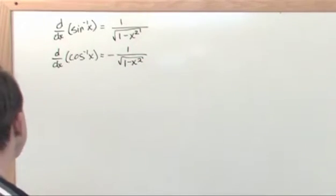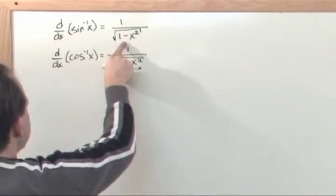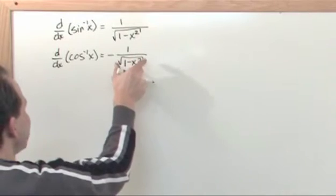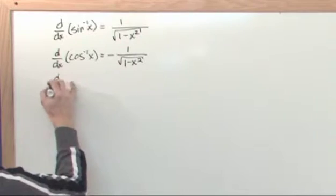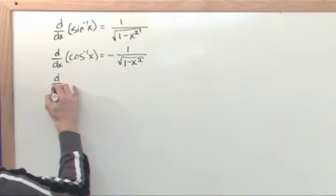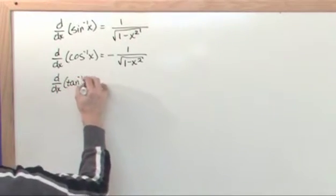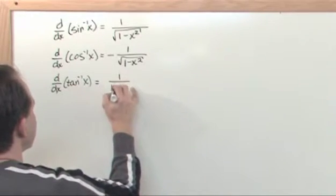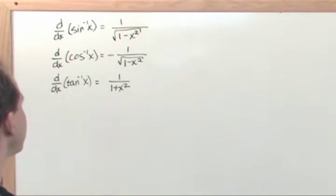Notice that symmetry — the derivative of the inverse sine, or arcsine, equals one over the square root of one minus x squared, and the derivative of the inverse cosine is the exact same thing with a negative sign out front. The derivative of the inverse tangent function is equal to one over one plus x squared.